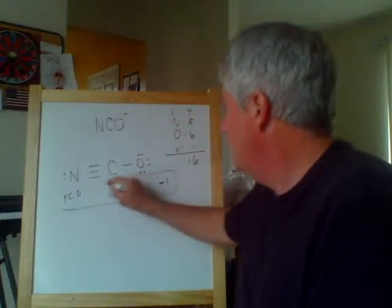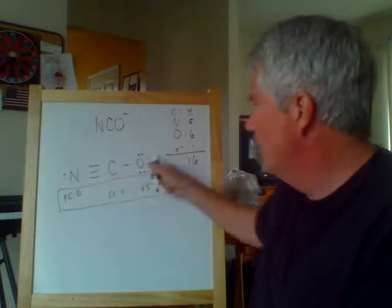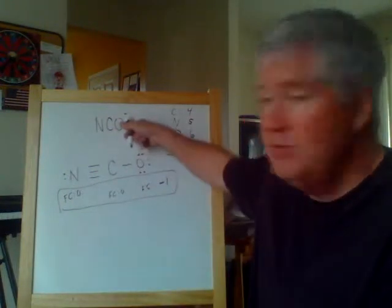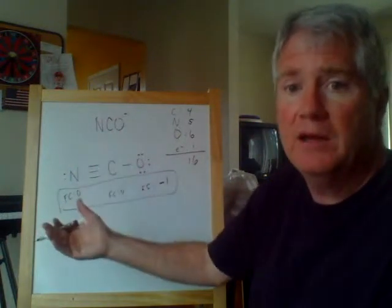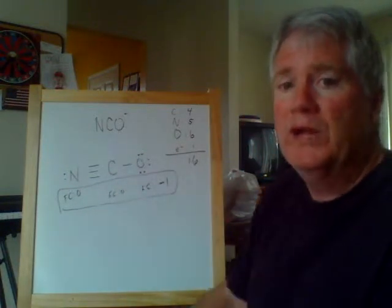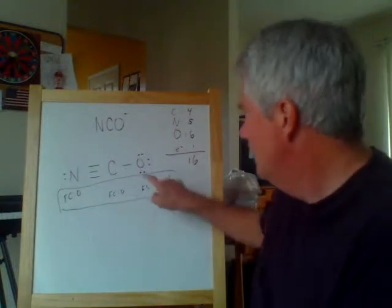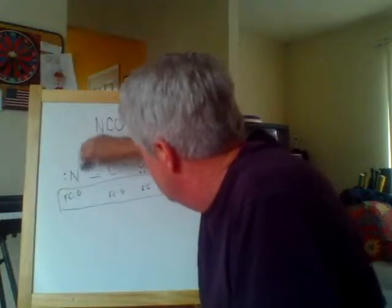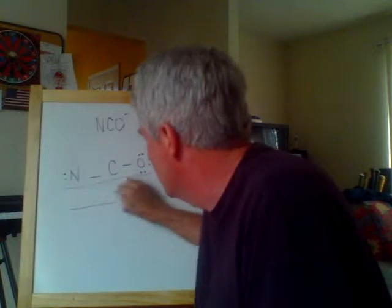This is pretty good. It shows that for this anion, the formal charge of each atom is as close to neutral as possible. One of them has to be minus one to add up to the minus one of the anion, and it happens to be the minus one on the most electronegative atom, which is oxygen. So right now this looks like a really good representation of the Lewis structure. However, we could have done this differently.